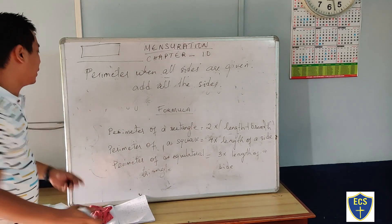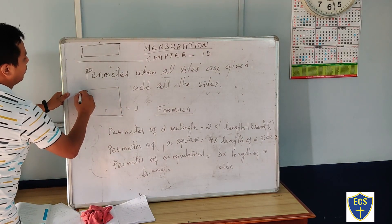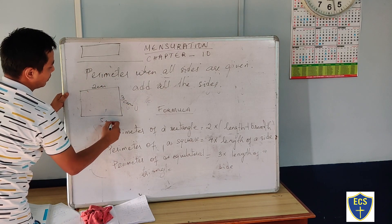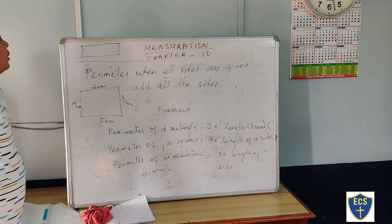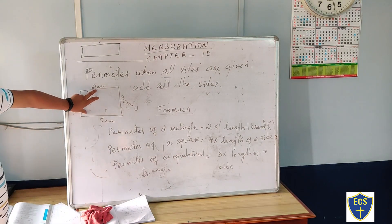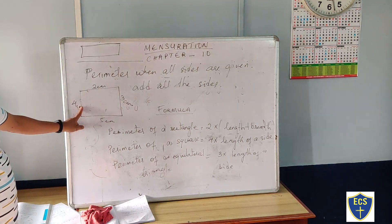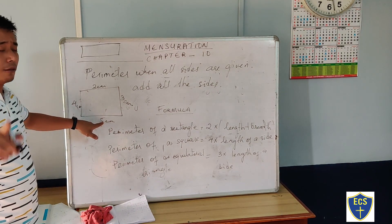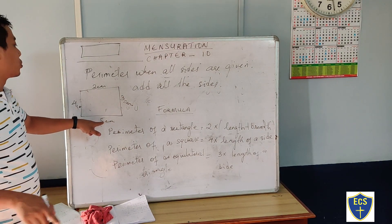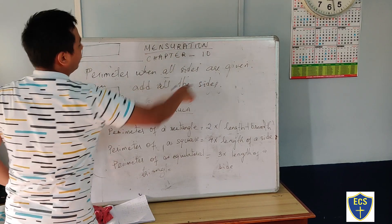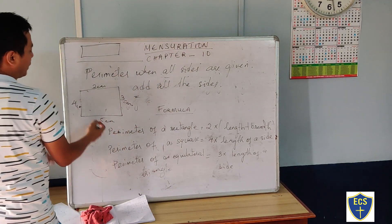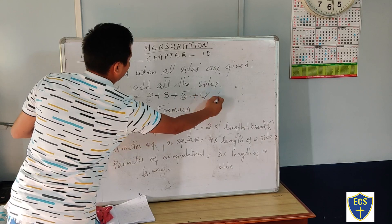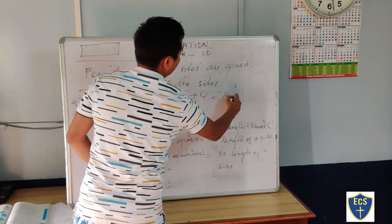For example, if a figure has sides of 2 cm, 3 cm, 5 cm, and 4 cm — all sides are given — we have to add all the sides to find the perimeter. That means 2 plus 3 plus 5 plus 4. That gives us 5, then 10, then 14. So the perimeter is 14 cm.